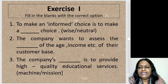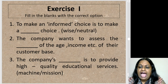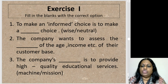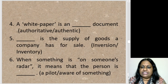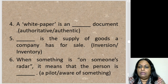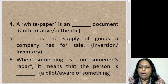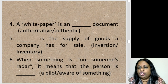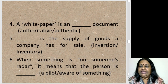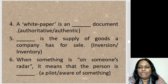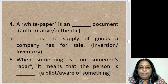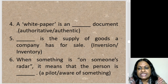The third sentence: 'The company's blank is to provide high quality educational services.' The options are 'machine' and 'mission.' The answer is mission. The fourth sentence: 'A white paper is an blank document.' The options are 'authoritative' and 'authentic.' The answer is authoritative — it is something that carries weight. White paper is a technical term in the world of business — it's an authoritative document.